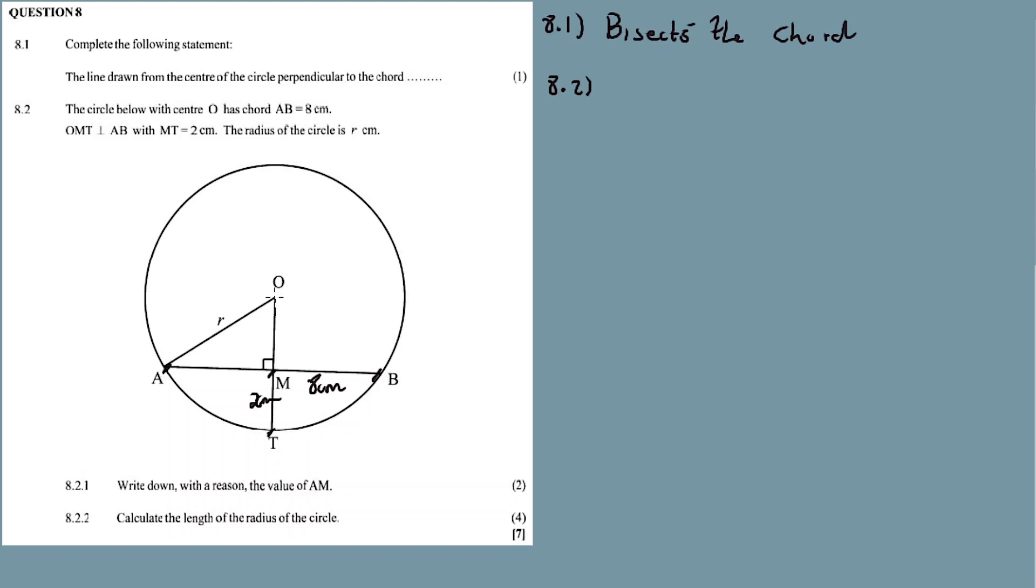You do realize that OA is the radius. Yes. OT as well is the radius. Meaning the distance from O to T is also R as well. Keep that in mind.